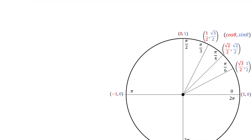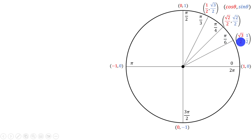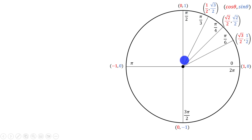Let's spend some time practicing with some of the common angles on the unit circle. Hopefully by now you have the first quadrant memorized. At an angle of 0, we have the point (1, 0). At pi over 6, we have (√3/2, 1/2). At pi over 4, we have (√2/2, √2/2). At pi over 3, we have (1/2, √3/2). And at pi over 2, we have the point (0, 1). We can use these angles as reference angles to find points on the unit circle in the second, third, or fourth quadrant.